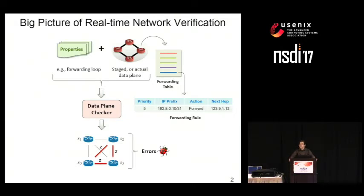It's important to note that data plane checking is not the same as network monitoring. In particular, a data plane checker could find a forwarding loop before any packet actually gets stuck in that loop. So network verification is a form of predicting certain kinds of errors before they occur. Since we want to do so in real time, the goal is to make these predictions in the order of milliseconds, and importantly, without causing false alarms.